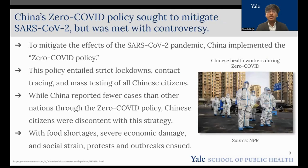In order to prevent the increase of infection within China, China used what was called the Zero COVID Policy, which sought to mitigate the effects of the pandemic. Using strict lockdowns, contact tracing, and mass testing of all Chinese citizens, China was able to keep the prevalence really low. But Chinese citizens were discontent with this strategy, as the Zero COVID Policy caused food shortages, severe economic damages, and social strain. Chinese citizens protested against the policy until it was repealed in December 2022.